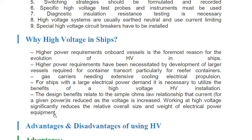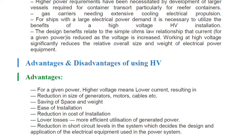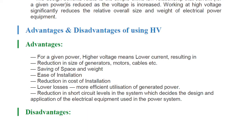The design benefits relate to simple Ohm's law: current for a given power is reduced as voltage is increased. Working at high voltage significantly reduces the overall size and weight of electrical power equipment. Advantages include: for a given power, higher voltage means lower current, resulting in reduction in size of generators, motors, cables, saving of space and weight, ease of installation, reduction in cost of installation, lower losses, more efficient utilization of generated power, and reduction in short circuit levels in the system.